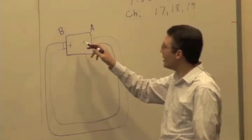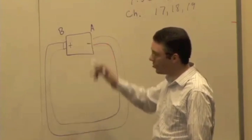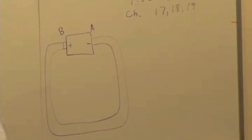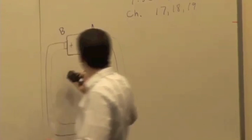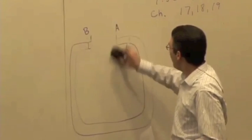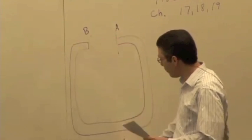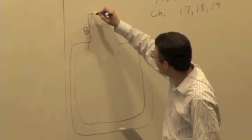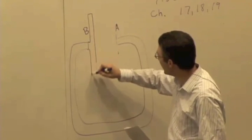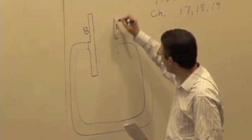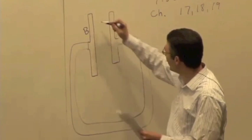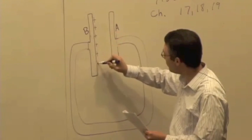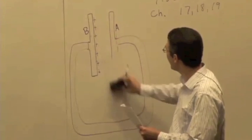A battery is just maintaining a charge separation. Let me draw this like we drew our picture last time when we were looking at the example of finding the charge distribution on the wires — we have a positively charged plate and a negatively charged plate.